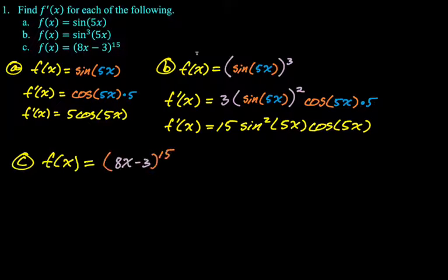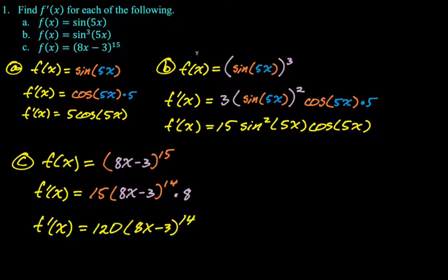Alright, next up. f(x) is the quantity (8x-3)^15. So the derivative of something to the 15th is 15 times that thing to the 14th times the derivative of that thing. So we're going to do 15, that thing, which is (8x-3), to the 14th times the derivative of that thing, which is 8. And then we would typically rewrite this.